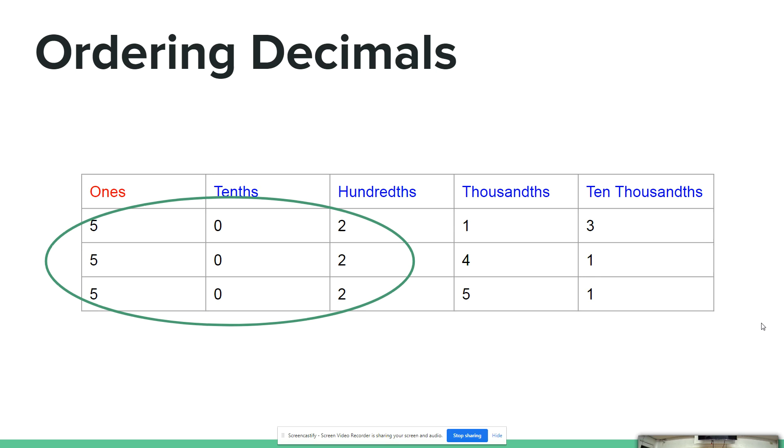We can see that on 1's, 10's and 100's place, we have the same value. Therefore, we will compare the numbers in the 1000's digit.